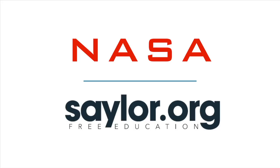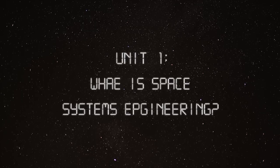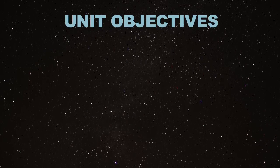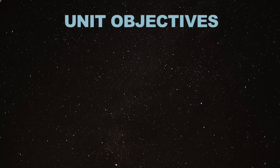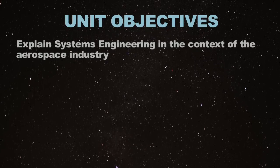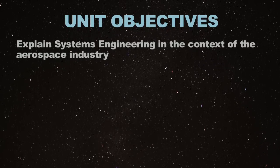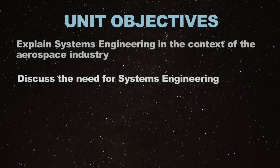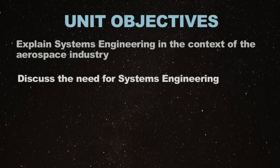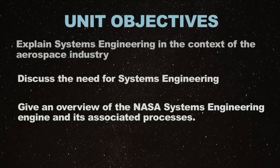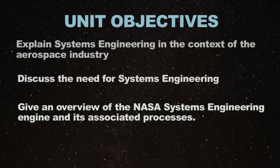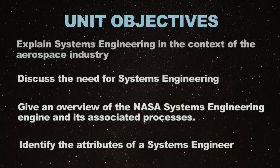Welcome to NASA and the Sattler Foundation Space System Engineering course, Unit 1: What is System Engineering? The unit objectives for Unit 1 include: explain systems engineering in the context of the aerospace industry, discuss the need for systems engineering, give an overview of the NASA system engineering engine and its associated processes, and identify the attributes of system engineering.